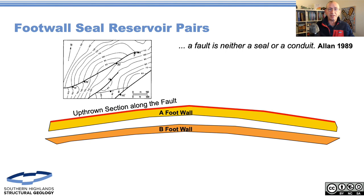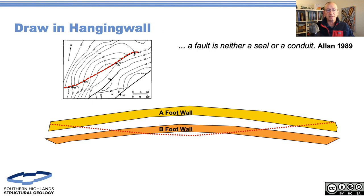I can then lay in my stratigraphy. Here we just measure our stratigraphy thicknesses. I've got an A reservoir and a B reservoir - that's the A and B reservoir in the footwall. We then think about what's happening on the other side. We can then draw in the hangwall, that's the dotted line.